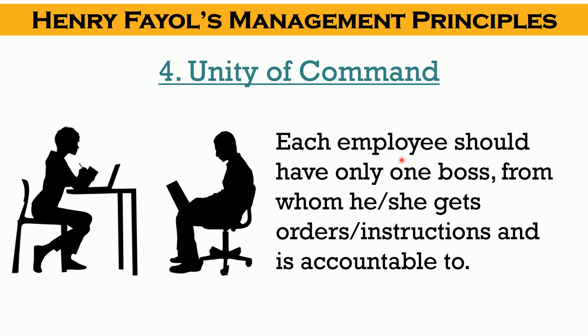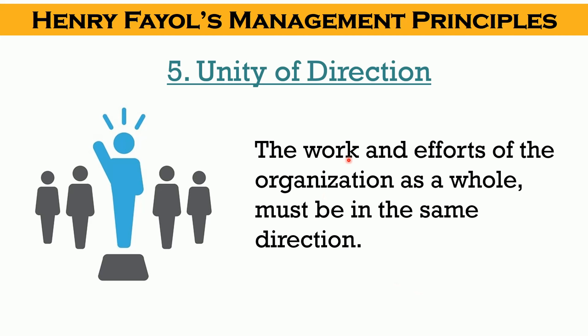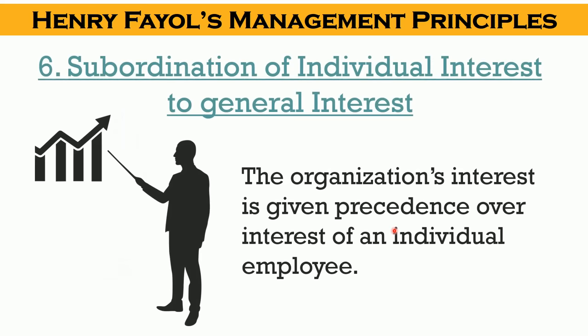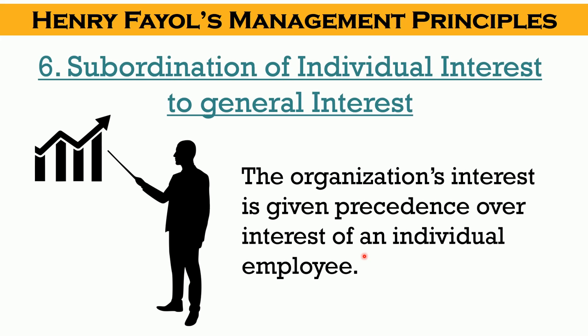Our next principle is unity of direction. The principle says that every effort of the organization as a whole must be in the same direction, that is towards the accomplishment of the organization's goals. Next is subordination of individual interest to general interest, meaning that the first and foremost priority is given to the organization's collective good and interest. All decisions are taken keeping the organization's benefit in mind.